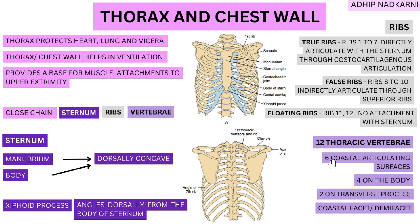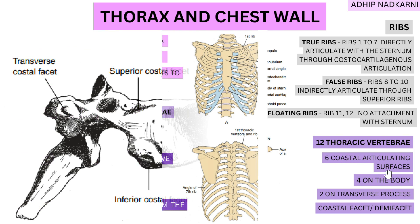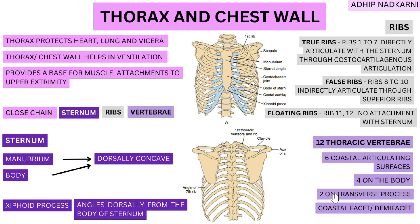Moving on to the third component — the thoracic vertebrae. There are 12 thoracic vertebrae and they articulate with your ribs. These articulations are called costal facets or demi-facets. There are six costal articulating surfaces in total: four on the body — two on each side — and two on the transverse process, one on each side. So four plus two equals six costal articulations.